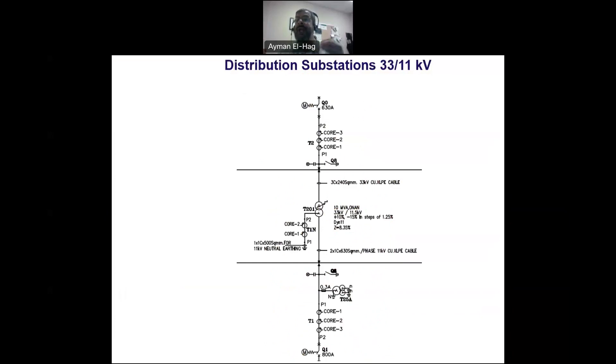As opposed to ONAF, oil natural air forced, or OFAF, oil forced air forced. So we have different types of cooling of the transformer. This one is an ONAN.